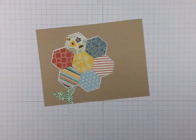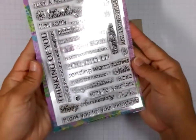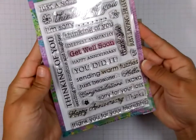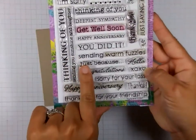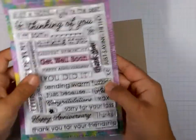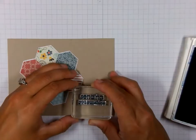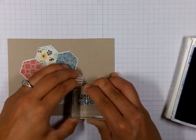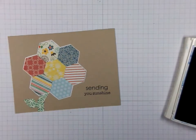I trimmed off the excess there that was hanging out. Now this is my sentiment from Hero Arts, combining the word "sending" and then the small words "sunshine." I'm stamping it in Not Quite Navy ink and there's my custom sentiment.